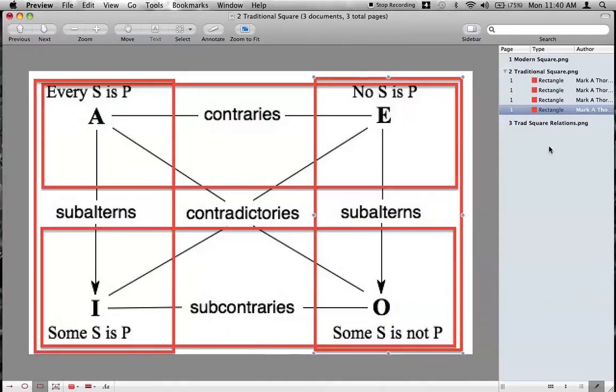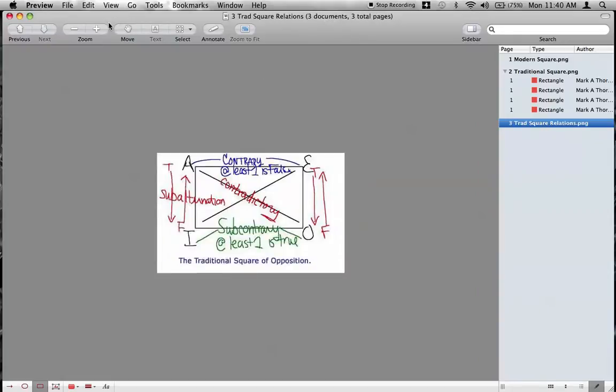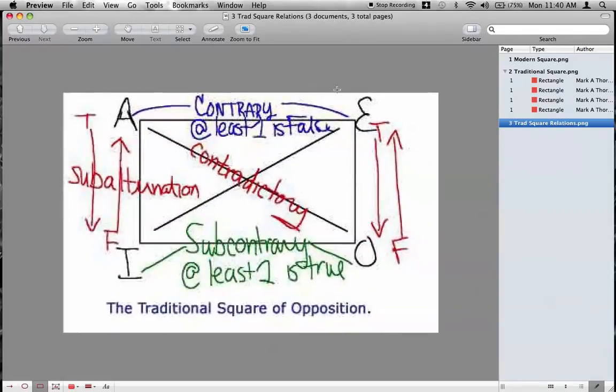Now, let me move to my next one so you can see an idea of what the relationships are, and this is somewhat of a mess, but I think you'll understand the idea. So, you have your A, your E, your I, and the O. The contraries, the definition of the contrary relationship is that at least one of these is false, and that's hard to read, but at least one of these is false, and they're not both true.